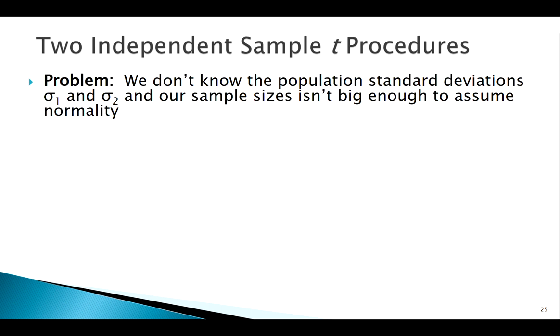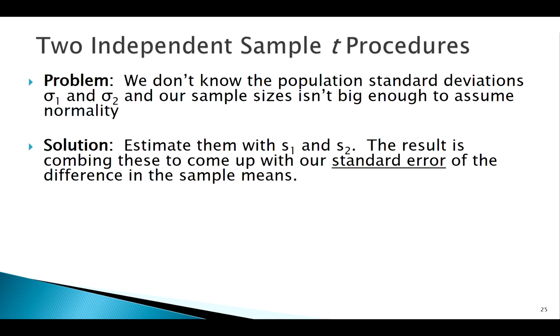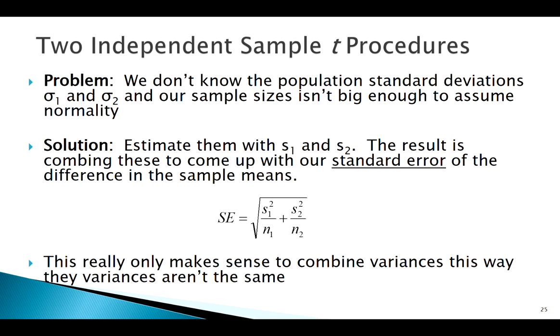Welcome back. Let's think a little more about independent two-sample tests. The big issue is that usually we're not going to know about the normality of both populations — specifically, we're probably not going to know their two variances or standard deviations. Just like with one sample, we use s1 to estimate σ1 and s2 to estimate σ2, which gives us a standard error. This is really only a good approach if the variances of the two groups are different.